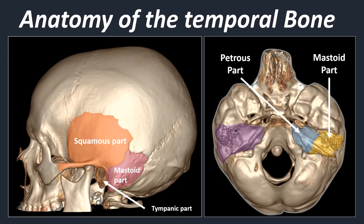In total we have four important parts: the squamous part, mastoid part, petrous part, and tympanic part. We also have two processes: the mastoid process and the styloid process — normally a small bony protrusion which in some cases can be quite long.